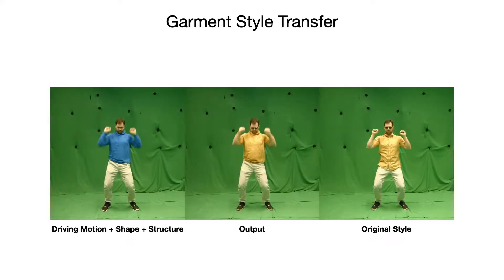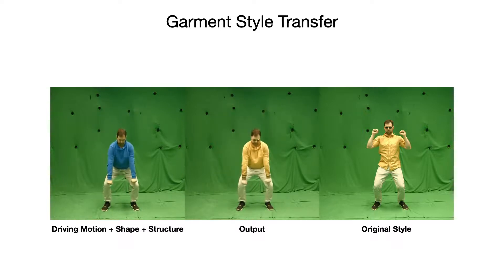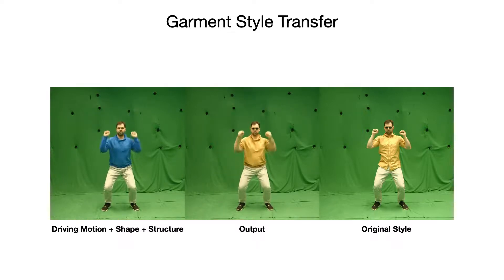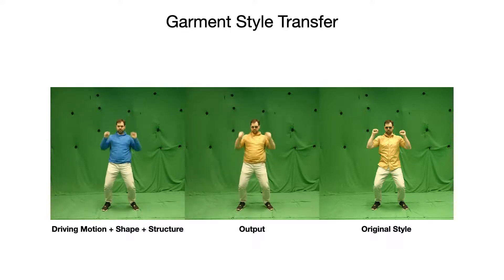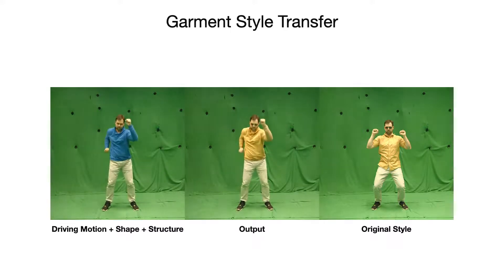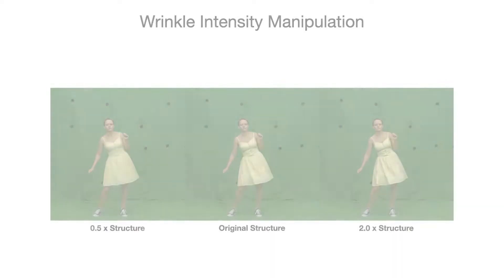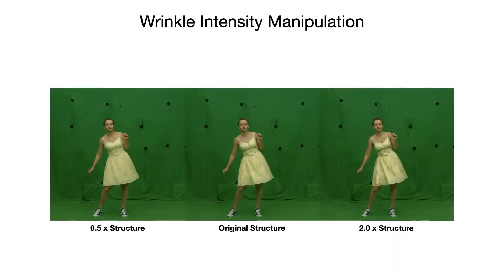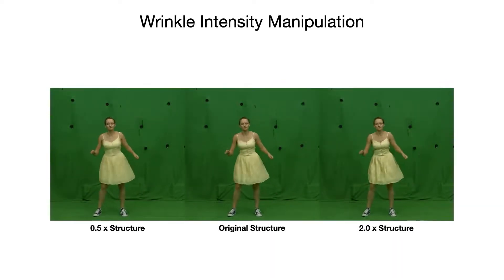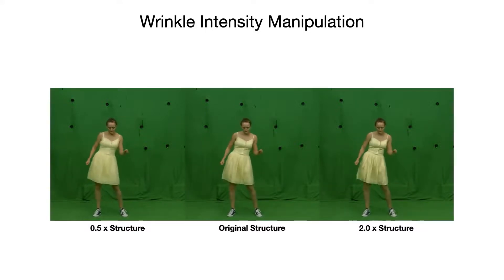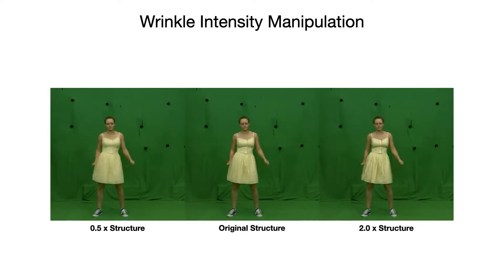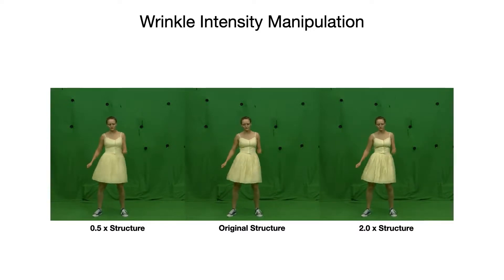Here, we exchange the shape and structure to generate a hoodie in the style of the original shirt. Note how our framework maintains the target actor's appearance — in this example, the sunglasses. Our framework also allows to change certain properties by manually manipulating the predicted clothing structure; in this example, we use a constant factor to alter the intensity of wrinkles in the skirt during re-enactment.